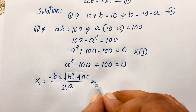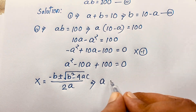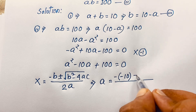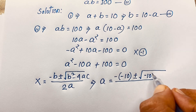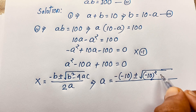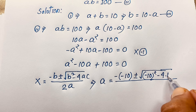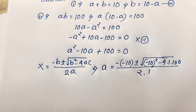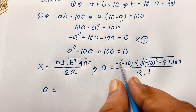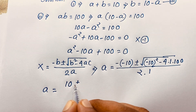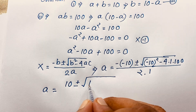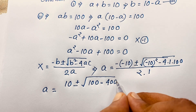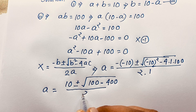So a equals negative b — b is negative 10, so minus of negative 10 is positive 10 — plus or minus square root of (negative 10 squared minus 4 times 1 times 100), over 2 times 1. That gives us 10 plus or minus square root of (100 minus 400), over 2.